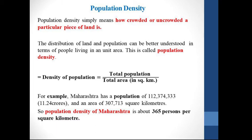Let's have an example of Maharashtra. Maharashtra has a population of 11.24 crores with an area of 3,07,713 square kilometres. So with the help of this formula, if we calculate the population density of Maharashtra, it comes around 365 persons per square kilometre.